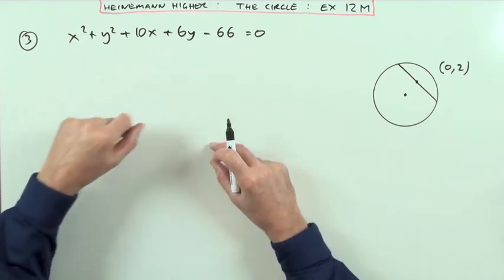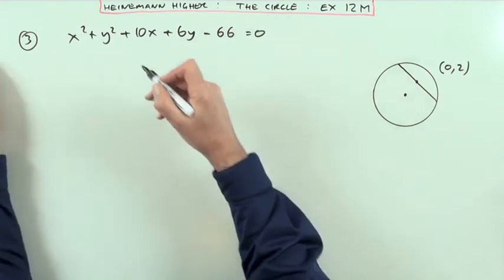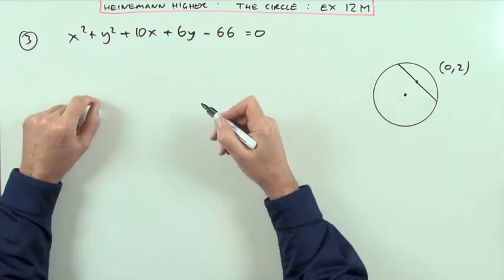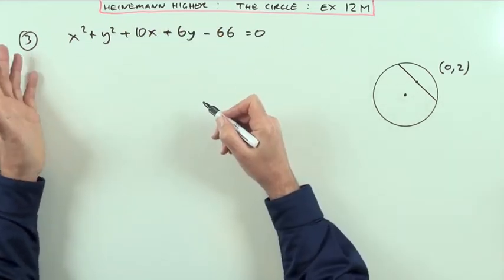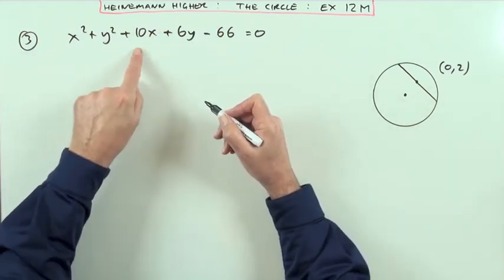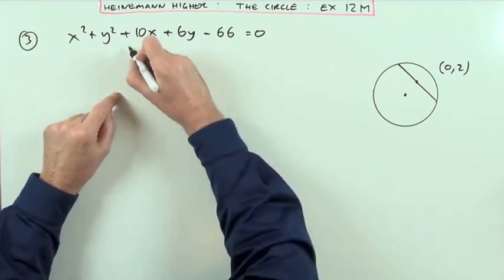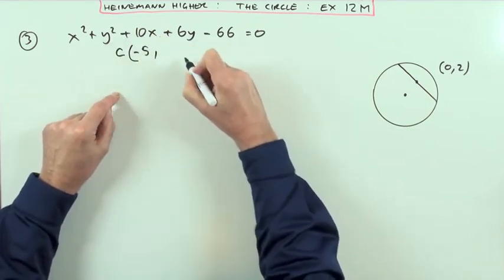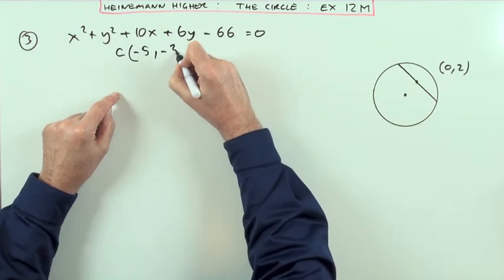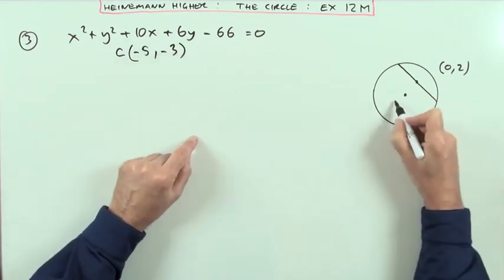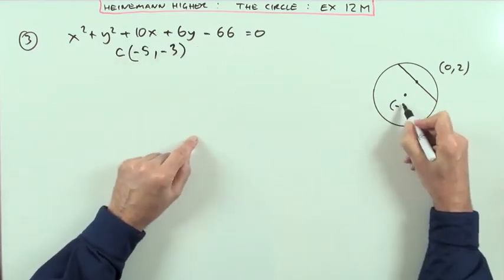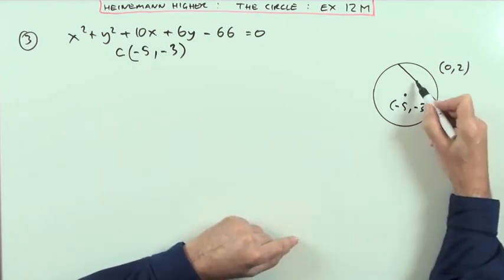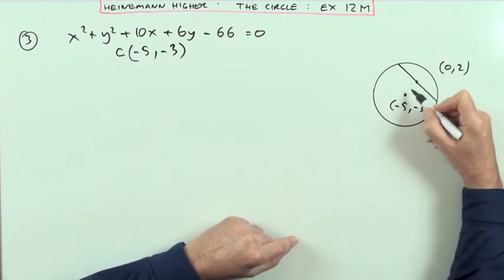The center of the circle you can extract immediately from the equation, because it's not been greatly disguised. By multiplying out those original brackets — x minus a squared, y minus b squared — that'll simply be twice the product, so that's minus 2a. The center would have been negative five and negative three, so that's the point (−5, −3).